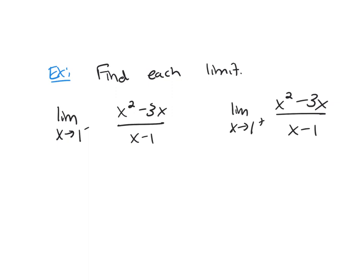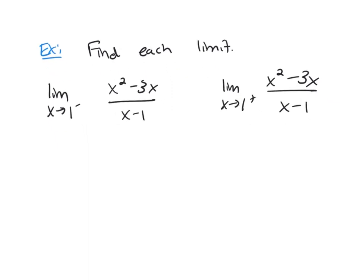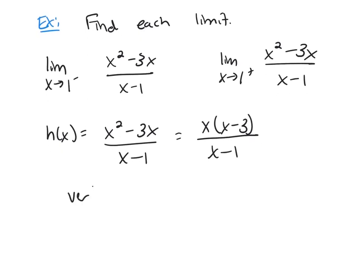The first thing we're going to do is use what we learned about vertical asymptotes. We're going to take this function and factor the numerator and denominator. The denominator won't factor anymore. I can factor an x out of the top. And I see that my only vertical asymptote is x equals 1.